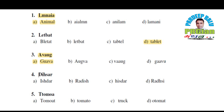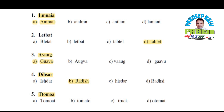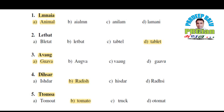Fourth point: D I S A R. What will it form? Yes, right — Radish! Radish means Mooli. Fifth point: T T O M O A. What will it form? Yes, right — Tomato. Means Tomato. Okay? So this was our exercise. Let's move ahead.